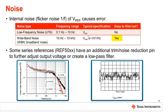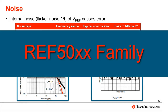On the other hand, wideband noise is specified above 10 Hz and can be more easily filtered out. This value is typically represented as nanovolts per root hertz or RMS voltage. Since the noise from the reference is often related to the remainder of the circuit in an application, some series voltage references, such as TI's REF50xx family, include an additional noise reduction feature, which can further improve the performance and precision of the voltage reference.